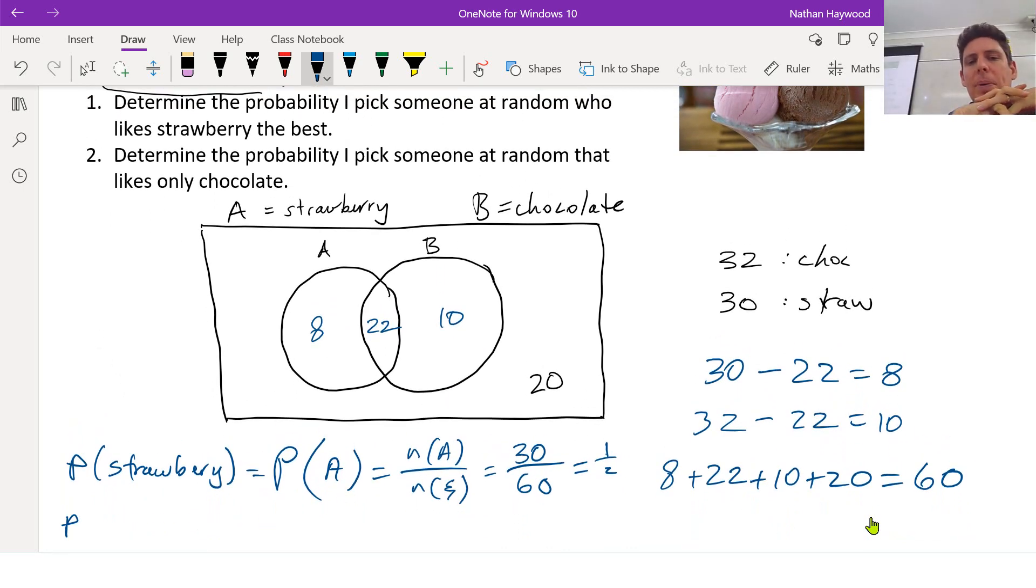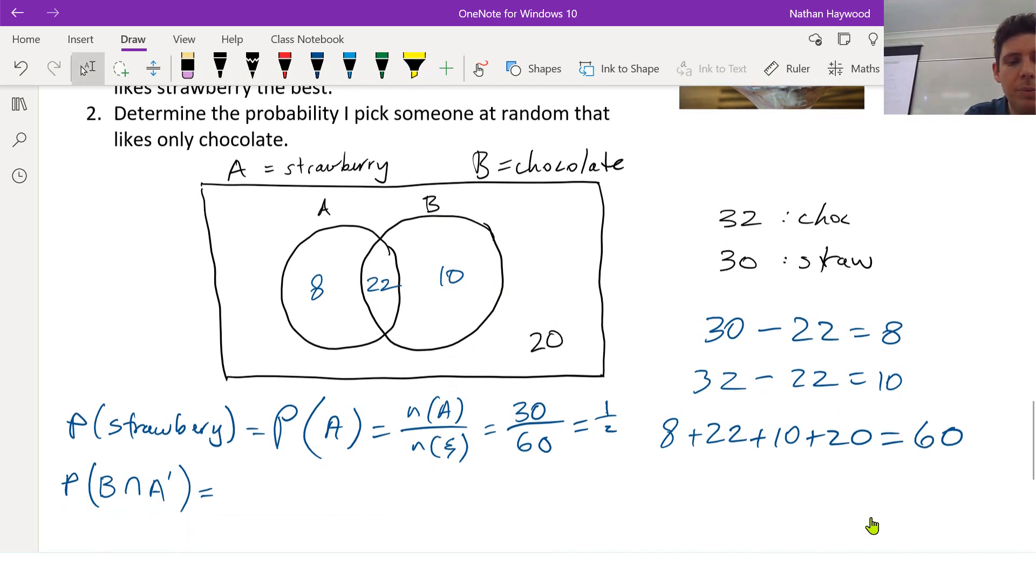So next, we want to pick someone that only likes chocolate. So you could write only chocolate. Let's try and figure out what are the symbols using A and B for only chocolate. B and not A. So intersection, so this is B, this is not A, so it's the intersection of those two which is only that number. So we need the number of those people which I just said is 10. And the total is? 60.